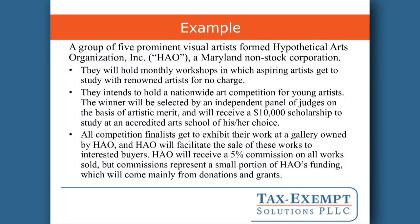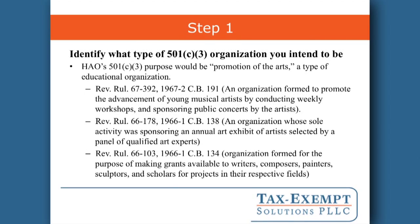Let's look at a specific example. We have an arts organization called the Hypothetical Arts Organization, Inc. This organization has three main activities: they're going to hold monthly workshops; they're going to hold a nationwide art competition for young artists with a $10,000 prize that can be used as a scholarship; and the competition finalists will get to exhibit their work at a gallery owned by the organization, which will help sell the works and receive a commission. Proceeding with step one — what type of 501 organization is this? HAO's purpose would be promotion of the arts, a type of educational organization.